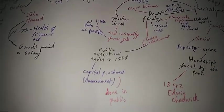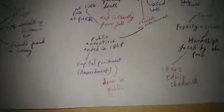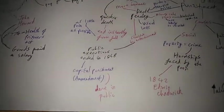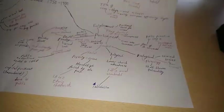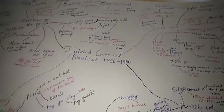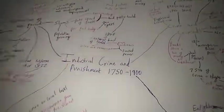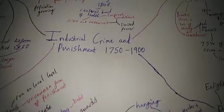So then capital punishment, there was an amendment that it shouldn't be done in public. That's basically all this because capital punishment is the death penalty. So we just did punishments, we just did industrial crime and punishment 1750 to 1900. That was fun. Alright goodbye. Get back to working in the factory.